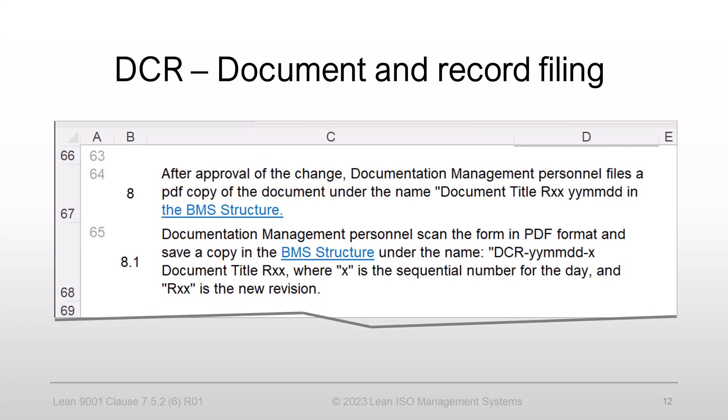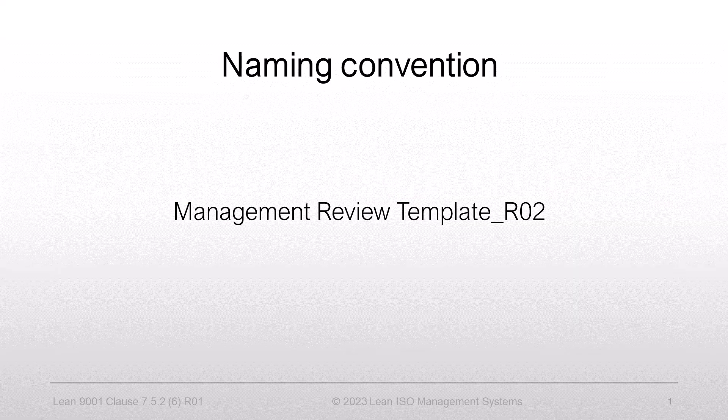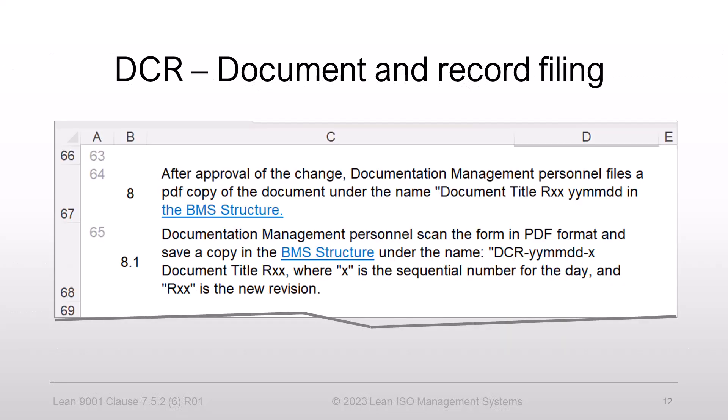The last section in our process is the document and DCR filing. After approval of the change, documentation management personnel files a PDF copy of the document in the BMS structure under the following name: the title underscore revision as Rxx. Next, documentation management personnel scan the DCR form in PDF format and save a copy in the DCR folder of the BMS structure. BMS structure is a depository for our documents and records — we will discuss it in the following videos.